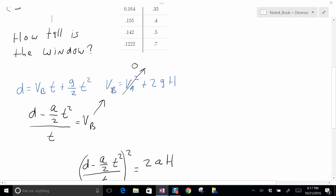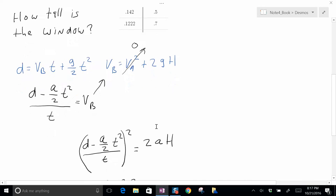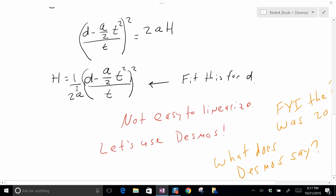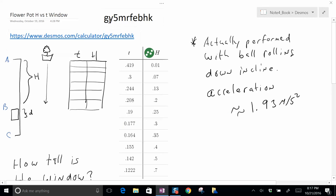If you arrange this first equation and solve it for vb, you get d minus one half t squared over t equals vb. You plug it in for vb and you solve it for h, and you get this very much non-linear thing. I don't even know how you would linearize this because you're squaring this thing that's got t squared on the top and a t. I honestly have no idea if that can be linearized.